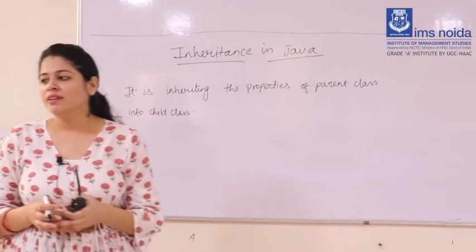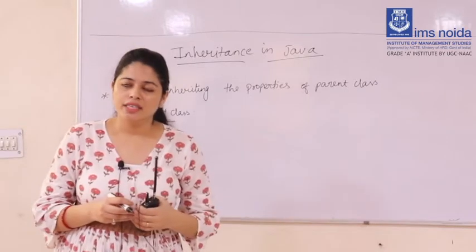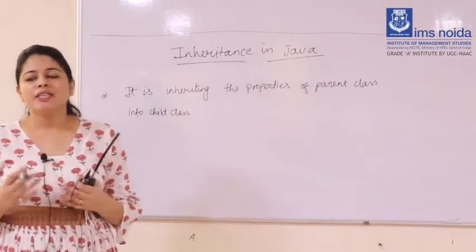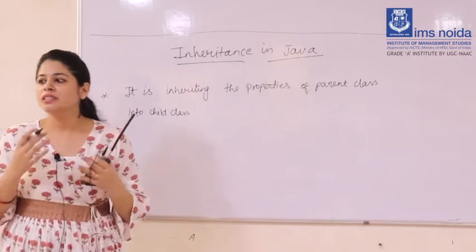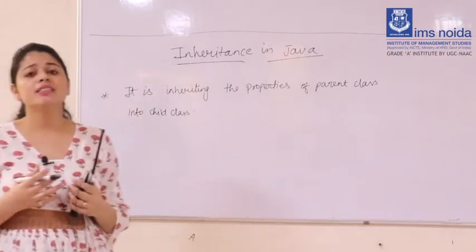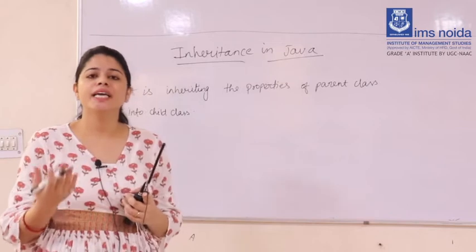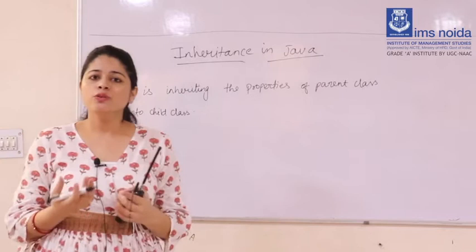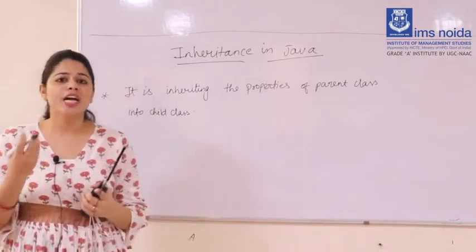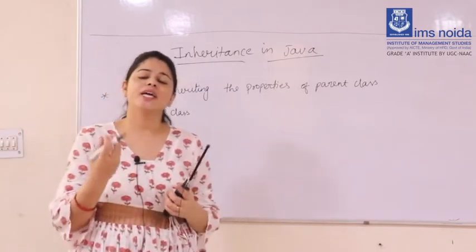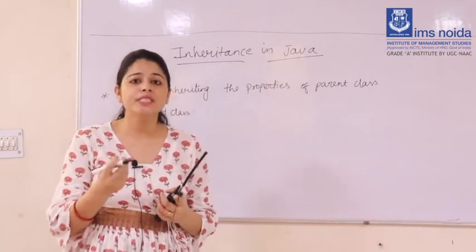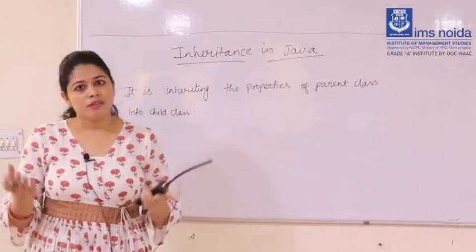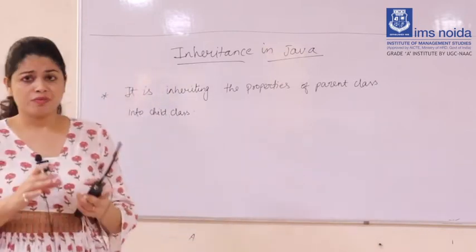The technical definition of inheritance is: inheritance is a mechanism by which an object acquires all the properties, behaviors, and methods from its parent class. So a child class inherits and acquires all the properties, behaviors, and methods from its parent class.